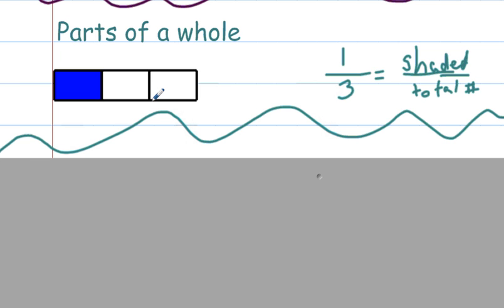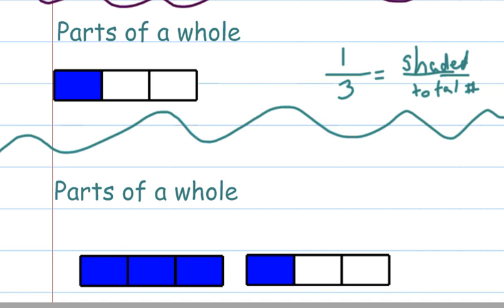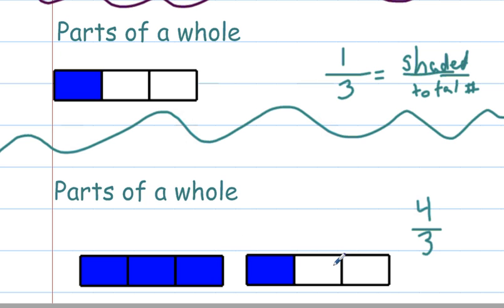Now this isn't always going to be the case. Let's look at a situation where the denominator is not always the bigger number. If we look at this next example, it's a little different. How many shaded do we have? One, two, three, four — so four are shaded. This is where it tricks people: how many are in the total? We still have one, two, three in the total. So this is an improper fraction — we have four shaded and three in each total, meaning we have more than one whole completely shaded.